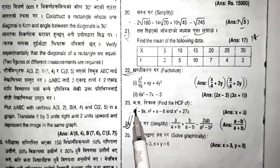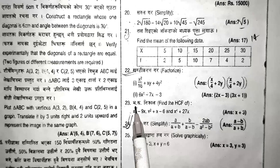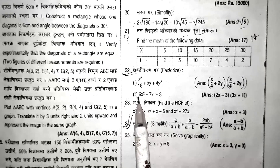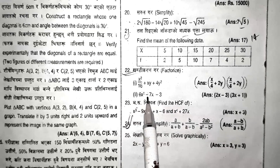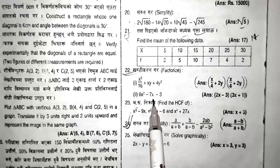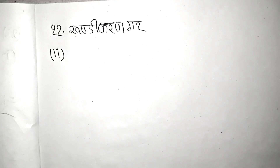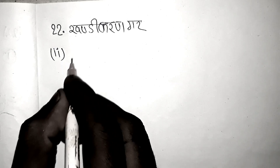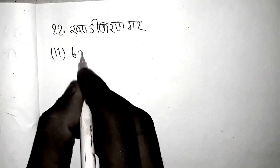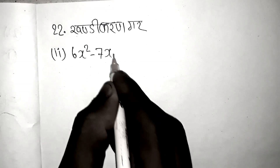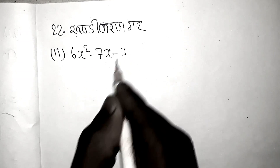I will show you question number 2: factorize 6x squared minus 7x minus 3. So we have 6x squared minus 7x minus 3.